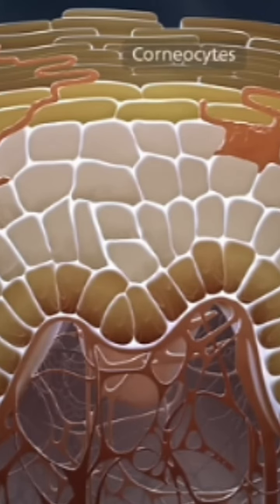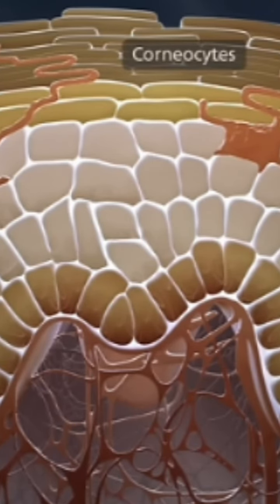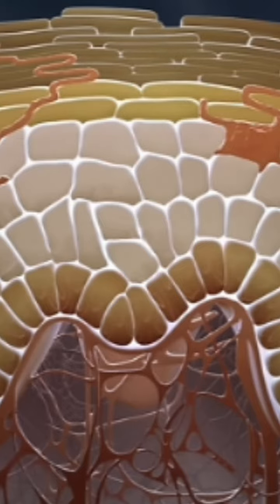Dead cells called corneocytes form the outermost layer and are largely responsible for the barrier function of the skin.